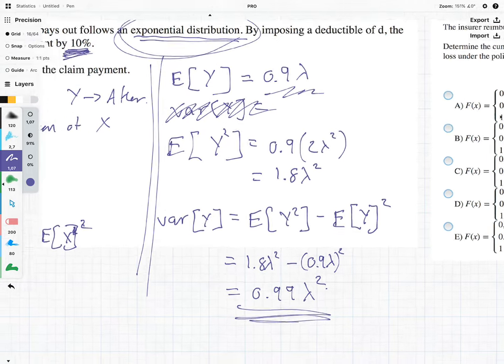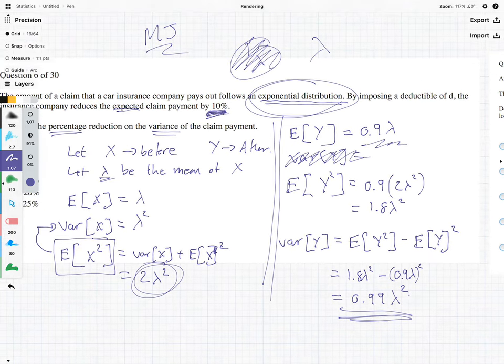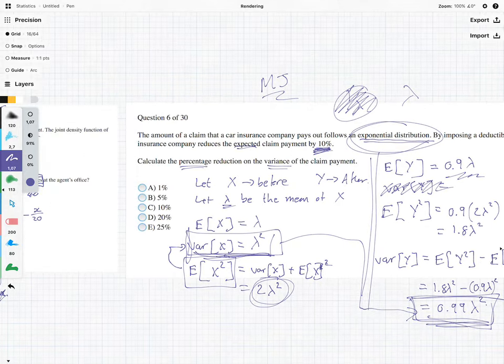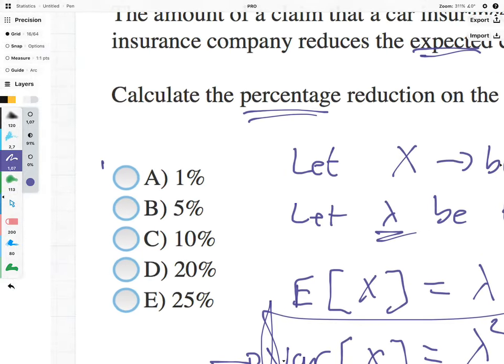And we're going to see that this compares to this. And the difference between the variance of X and the variance of Y is 1%. And let's see, is that a potential answer? And it is. So there we go.